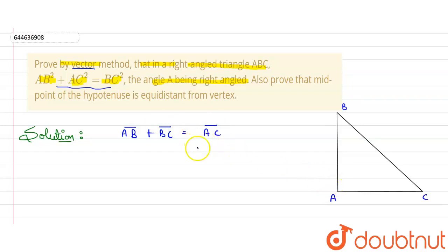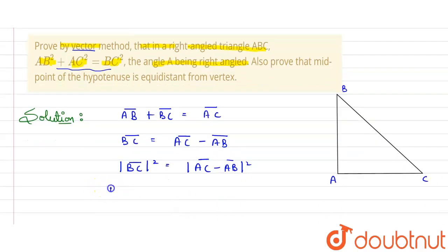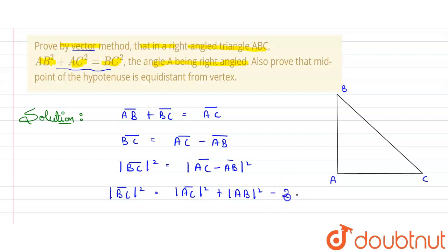From here, BC vector equals AC vector minus AB vector. Now add modulus to both sides and square. So the magnitude of BC squared equals the magnitude of AC squared plus the magnitude of AB squared minus 2 times...